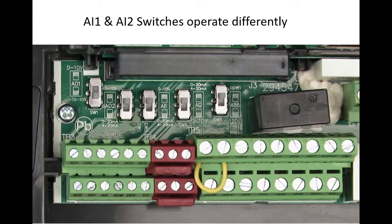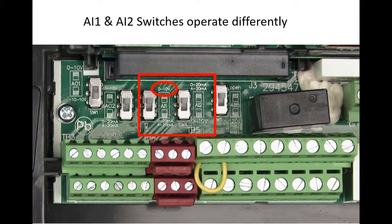The terminal board switches that switch analog inputs 1 and 2 between current and voltage are backwards from each other. Analog input 1 has voltage in the up direction and analog input 2 has it in the down position. So don't assume they both work in the same direction.